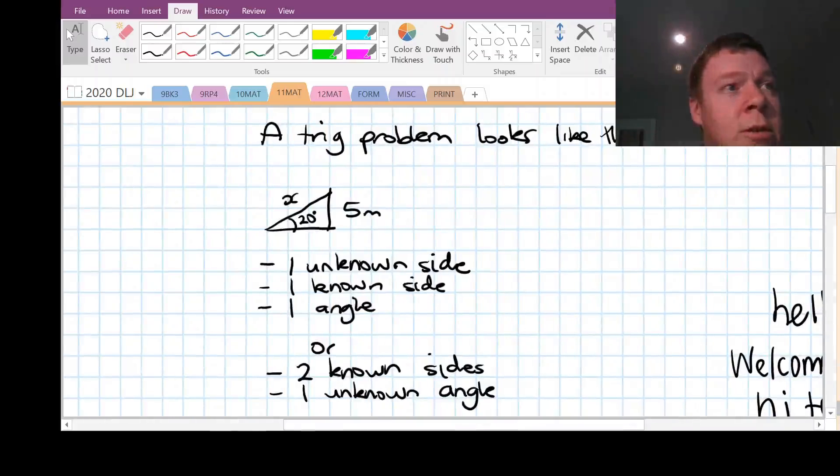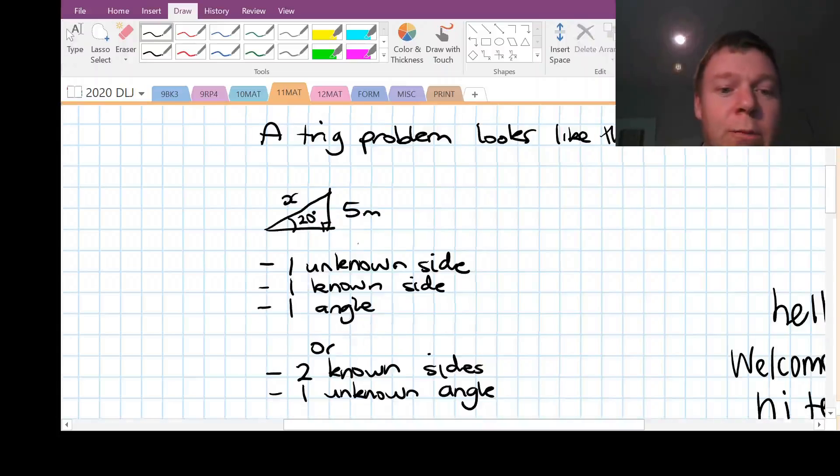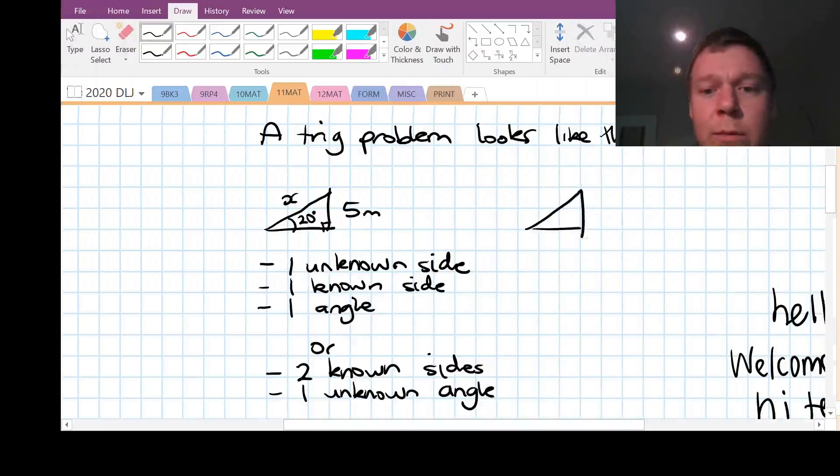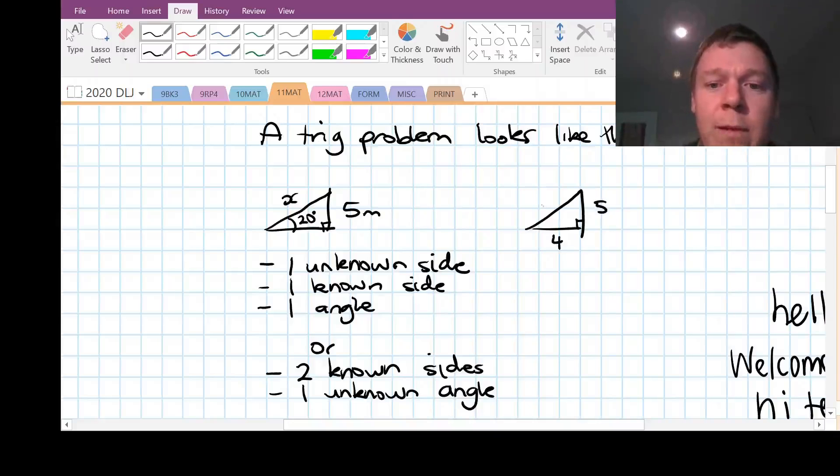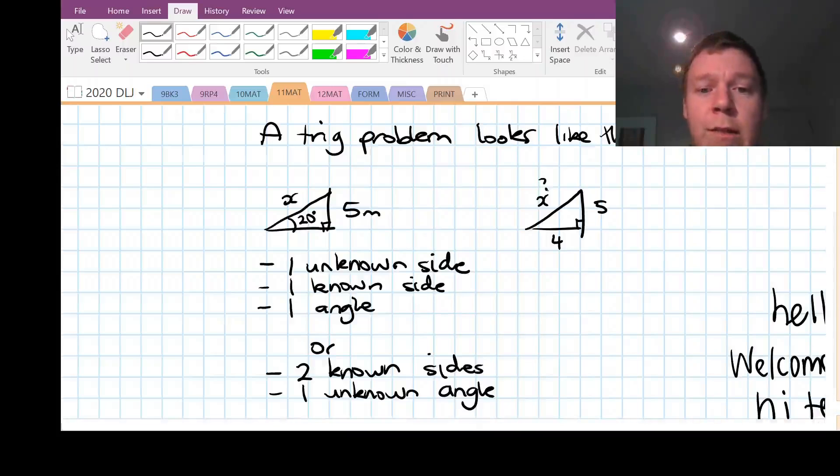Usually when we're solving a trig problem, it's very similar to a Pythagoras problem, but a Pythagoras problem just doesn't have any angles. So Pythagoras problem you might have this triangle, and you're trying to find what x is, but there's no actual angles involved. So trigonometry is when there's an angle involved.